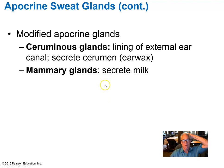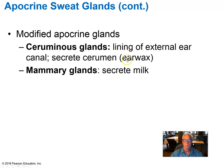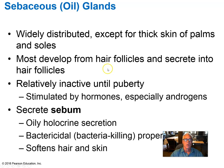Other modified apocrine sweat glands include ceruminous glands, which produce an orange-ish, waxy secretion in the ear canals — ear wax — which keeps debris and insects out of the ear canal so that sound waves can travel through unimpeded. The mammary glands are also modified apocrine sweat glands that secrete milk for nutrition of infants.